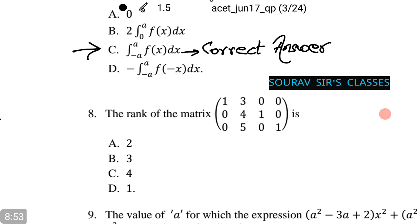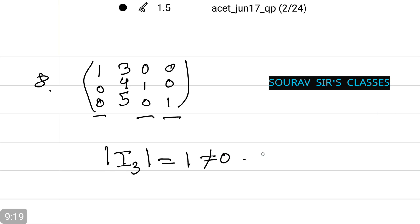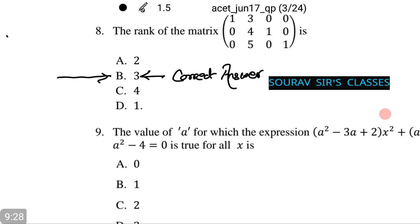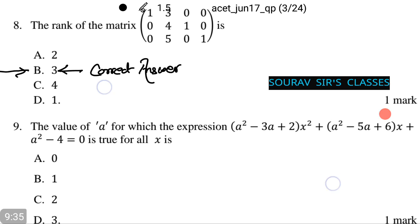Next we find the rank of a matrix. The following matrix is given and we find its rank. The given matrix contains three columns forming the identity matrix I₃. The determinant of I₃ equals 1, which is not equal to zero. Hence the rank equals 3. The correct answer is option b.